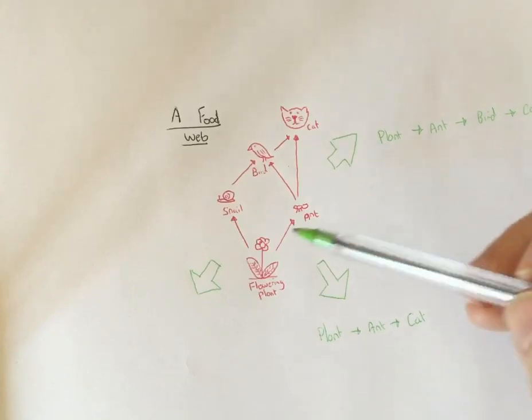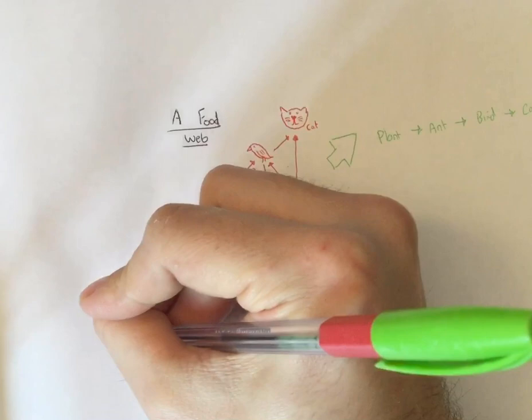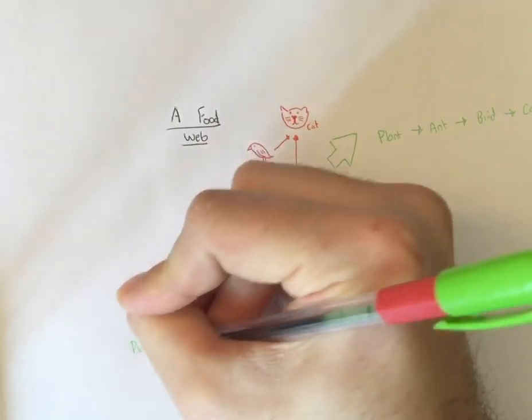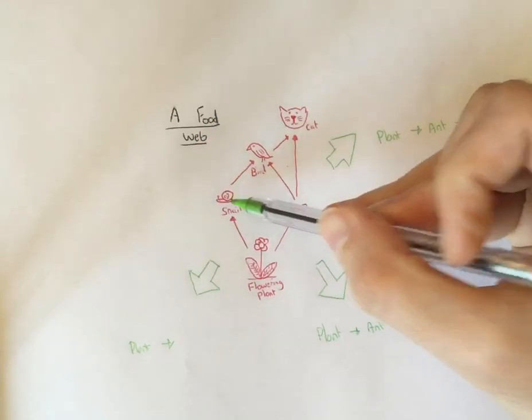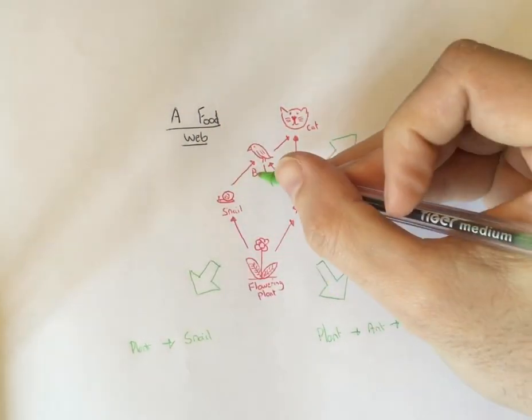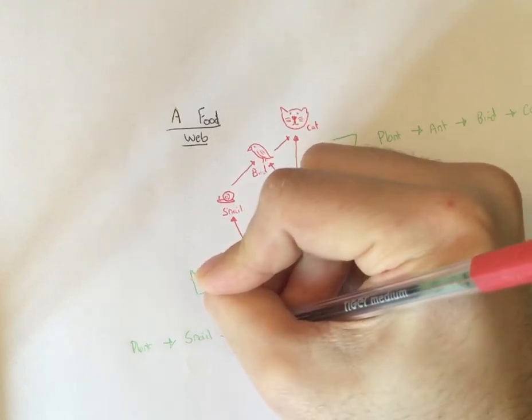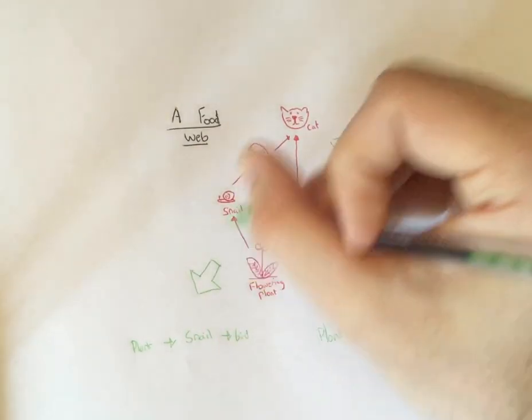And the final food chain we can have is involving the snail. So we've got our plant going to our snail, going to our bird, going to our cat.